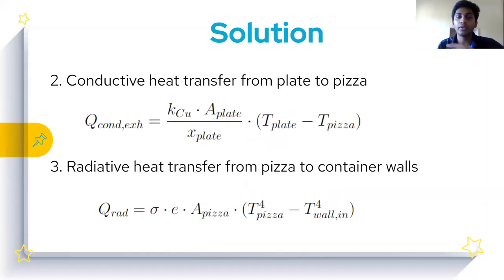After that, once the heat has been transferred to the copper plate, it will transfer the heat to the pizza through conduction. The governing equation for conduction is Q_conduction of the plate equals k of the copper plate times area of the plate divided by the thickness of the plate times delta T of the plate. That is temperature of the plate minus temperature of the pizza. Now the heat that started from the exhaust gas has reached the plate and has been transferred to the pizza.